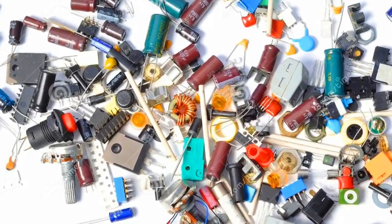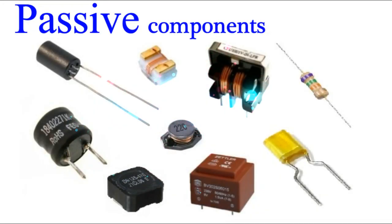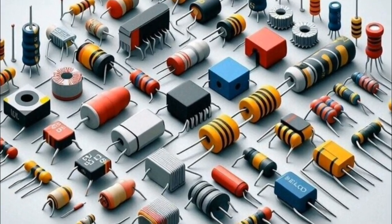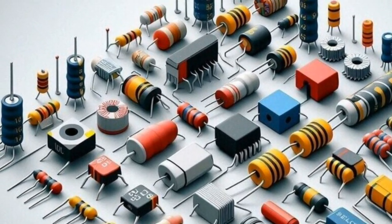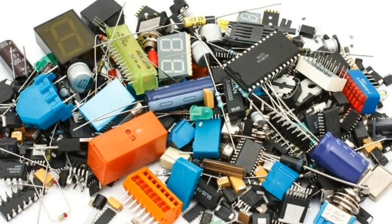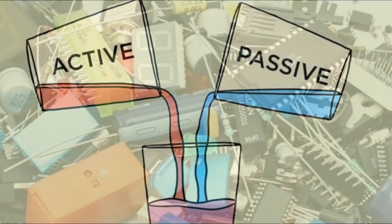All electronic components can be broadly divided into two categories: active components and passive components. These components are diagonally different from each other based on their functional characteristics and performance. In this video we will learn about the types of active and passive components and we will also discuss the difference between active and passive devices.